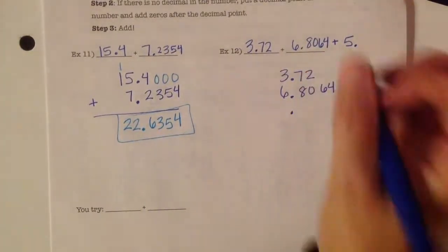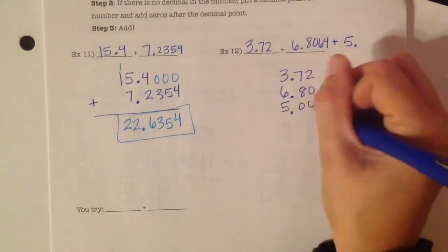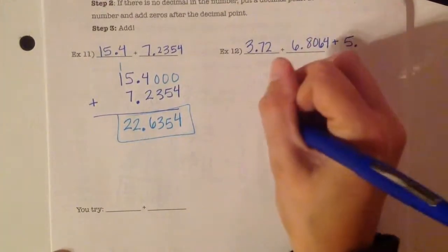So, I'll put my decimal point here. 5 goes to the left. 0s go to the right.